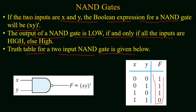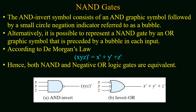This can also be verified from the truth table of the two-input NAND gate. The AND-invert symbol consists of an AND graphic symbol followed by a small circle negation indicator referred to as a bubble. Alternatively, it is also possible to represent a NAND gate by an OR gate graphic symbol preceded by a bubble for each input. This is due to De Morgan's law.